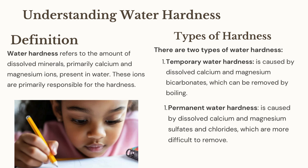What is water hardness? Water hardness refers to the amount of dissolved minerals, primarily calcium and magnesium ions, present in water. These ions are primarily responsible for the hardness.